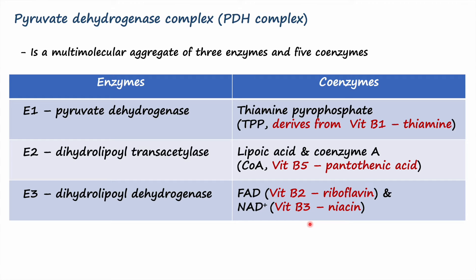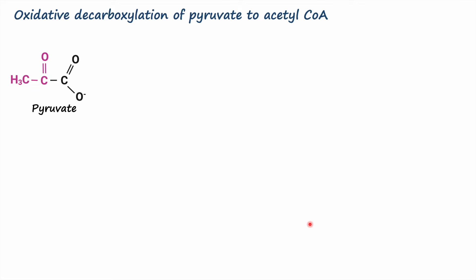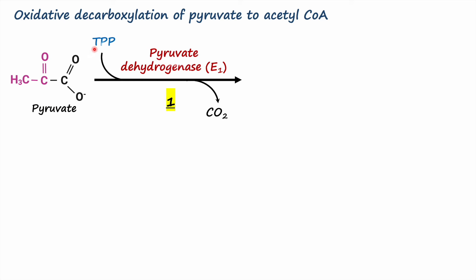Step one is the decarboxylation of pyruvate. Carbon one of pyruvate is released as carbon dioxide, and carbon two, which is the acetyl group, is transferred onto the thiamine pyrophosphate coenzyme. This coenzyme is bound to pyruvate dehydrogenase E1 enzyme, so step one is carried out by the E1 enzyme.